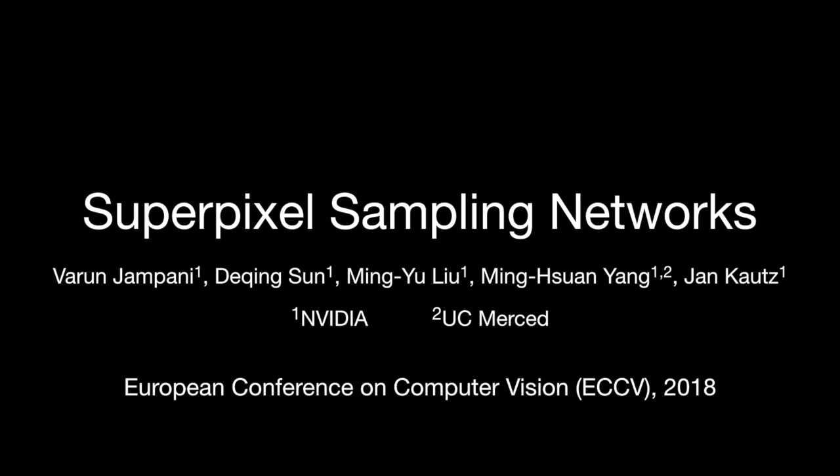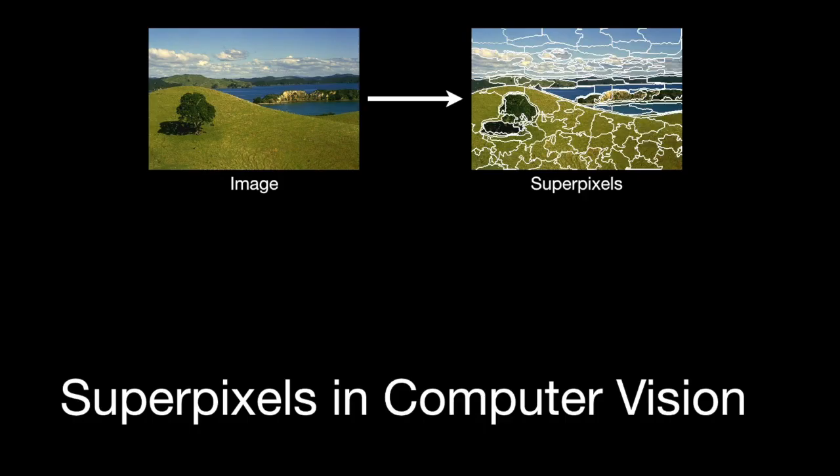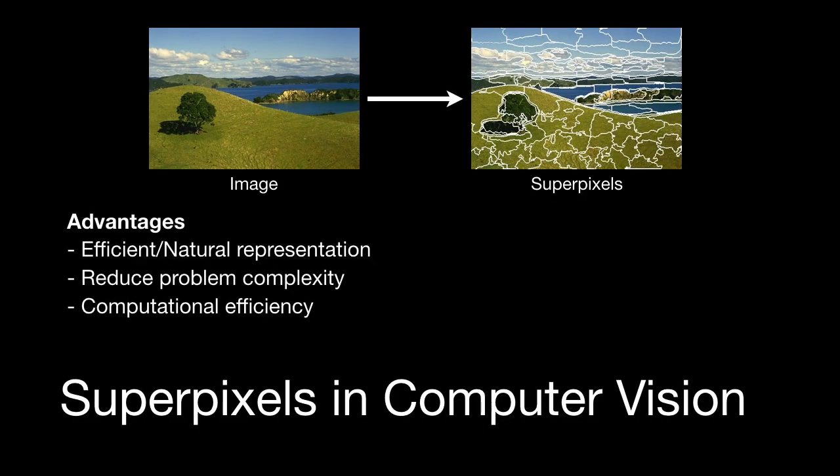We present superpixel sampling networks that generate superpixels using deep networks. Superpixels have several advantages for computer vision tasks. They provide a natural and efficient representation of image data. Because of a lower number of image primitives, they greatly reduce problem complexity, resulting in better computational efficiency.